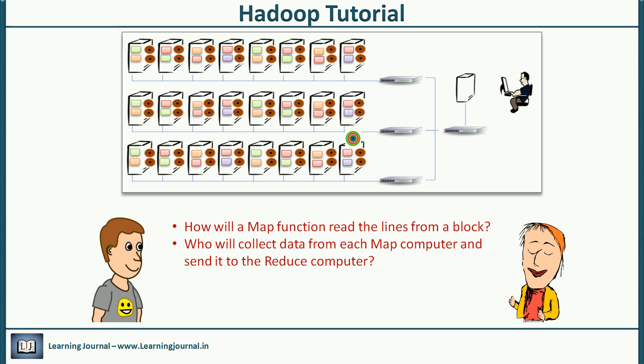But I have some doubts. How will a map function read the lines from a block? Who will collect data from each map computer and send it to the reduce computer? How does it all work? Can you elaborate on this? Yes, of course. The execution engine takes care of all these things. Let me show you the code for this example.